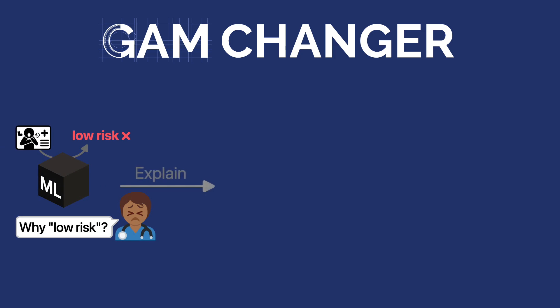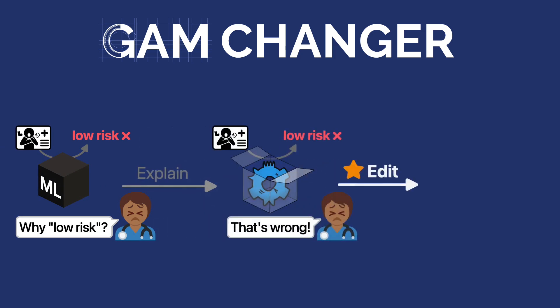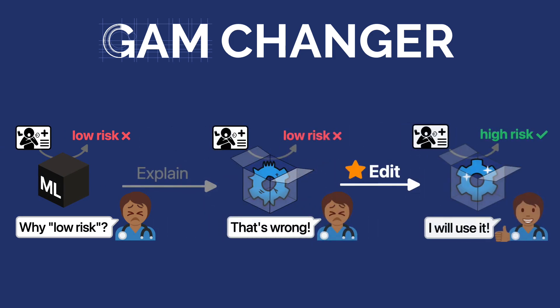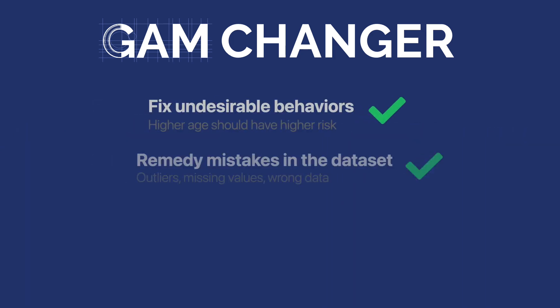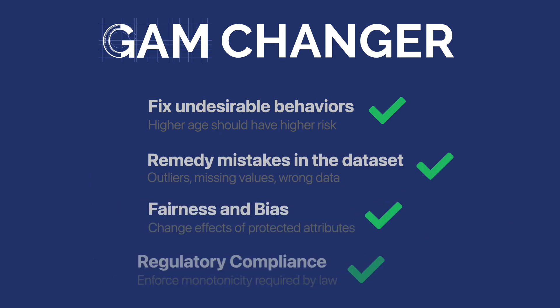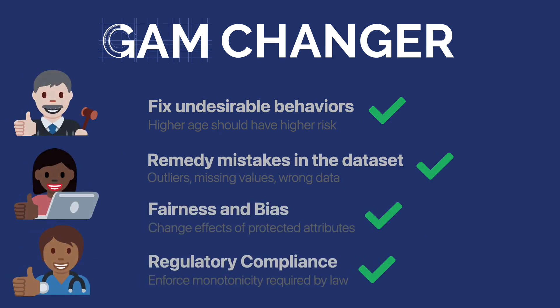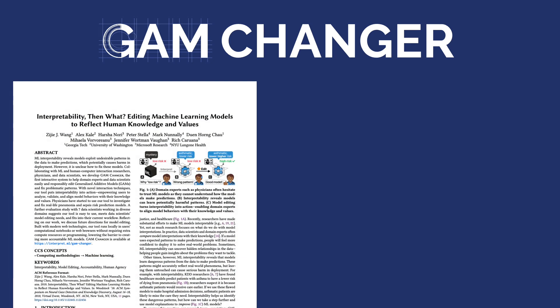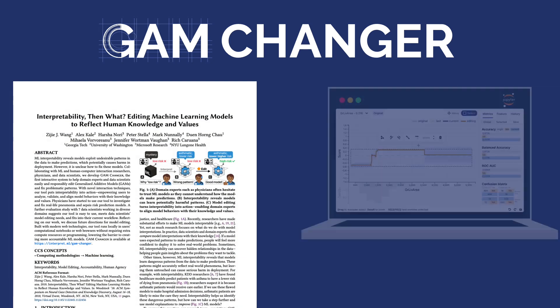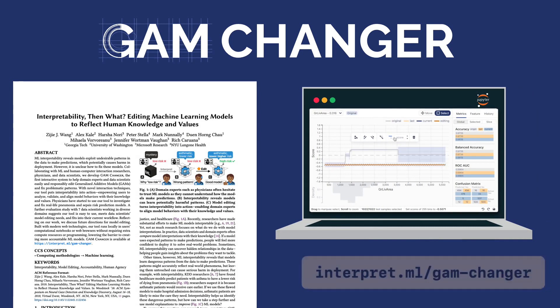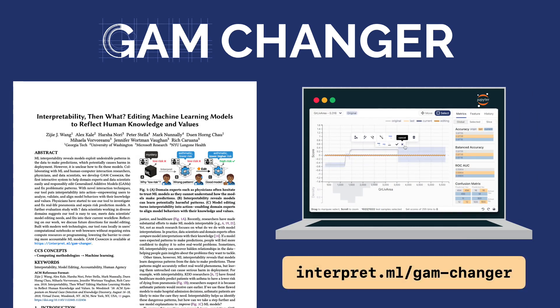Through a responsible and accessible design, GAM Changer turns machine learning interpretability into actions, empowering domain experts and data scientists to easily and safely align model behaviors with their knowledge and values. To learn more about GAM Changer, please read our research papers. You can also try out GAM Changer in your browser or computational notebooks by visiting the link here.